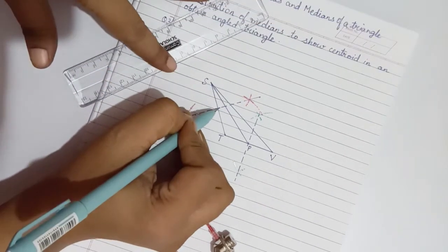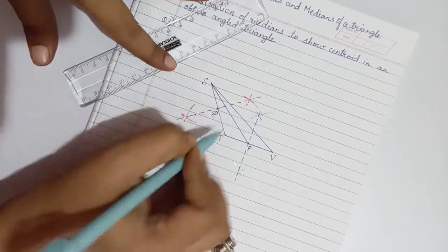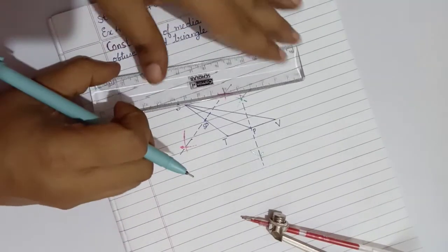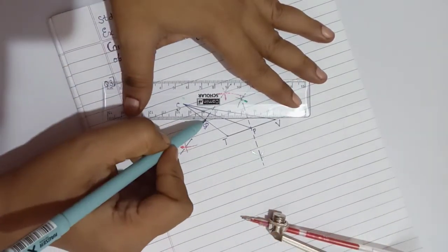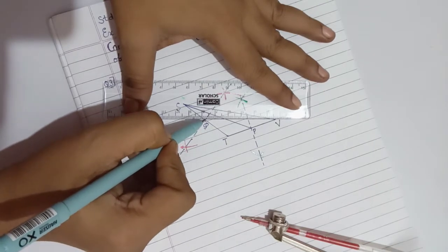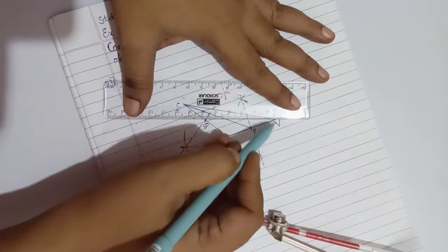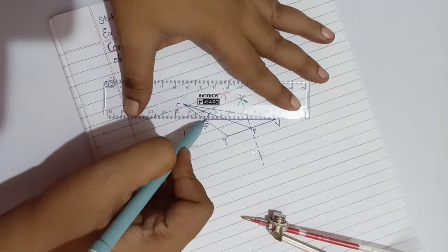Here we obtain point Q midpoint to be joined with the opposite vertex V. The midpoint Q joined to opposite vertex V gives us the median QV.